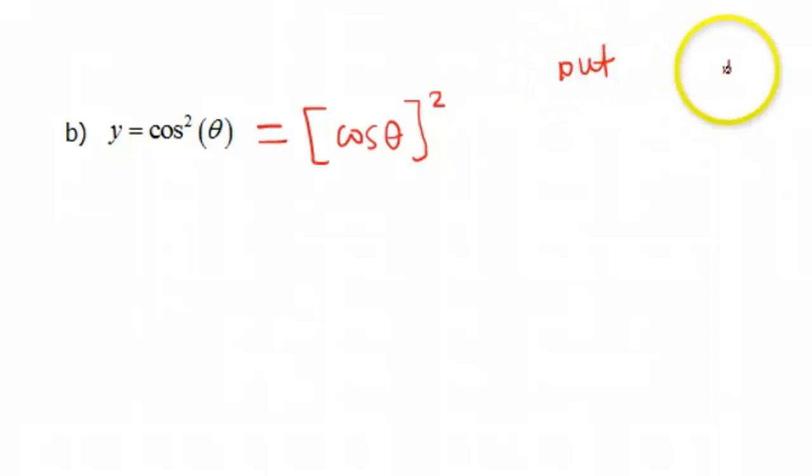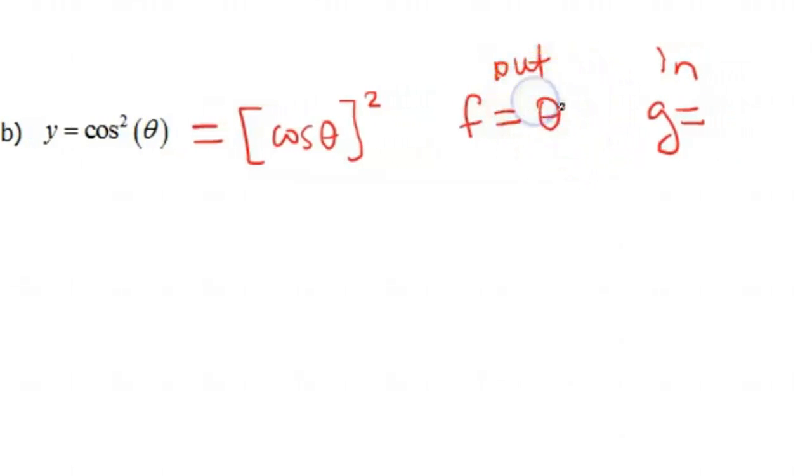So the outside and inside. Our f function is, in this case the outside is θ² or x², whatever variable you want to use, something squared. The inside function is cos(θ).